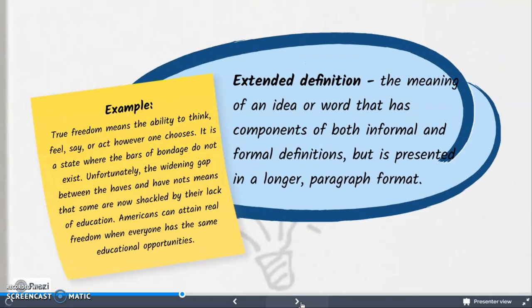The third type of definition is extended definition. The meaning of an idea or word has components of both formal and informal definitions, but is presented in a longer paragraph format. For example: True freedom means the ability to think, feel, say, or act however one chooses. It is a state where the bars of bondage do not exist. Unfortunately, the widening gap between the haves and have-nots means that some are now shackled by their lack of education. Americans can attain real freedom when everyone has the same educational opportunities.